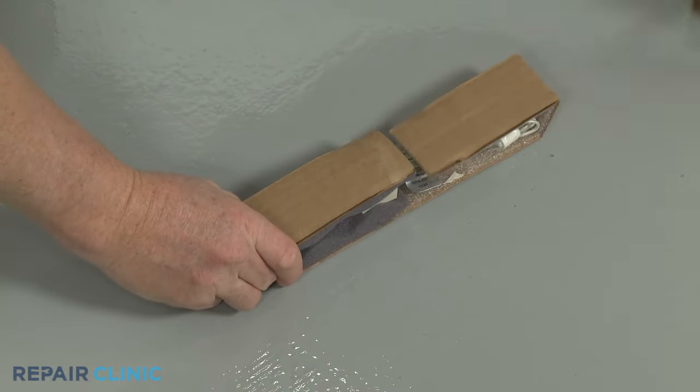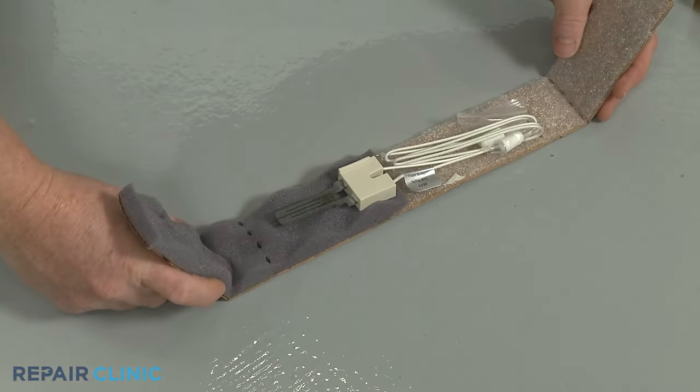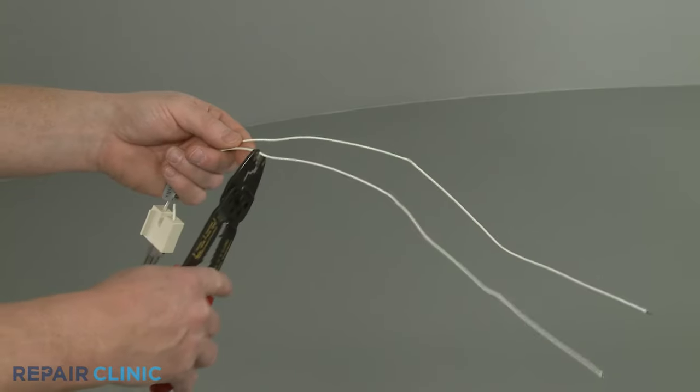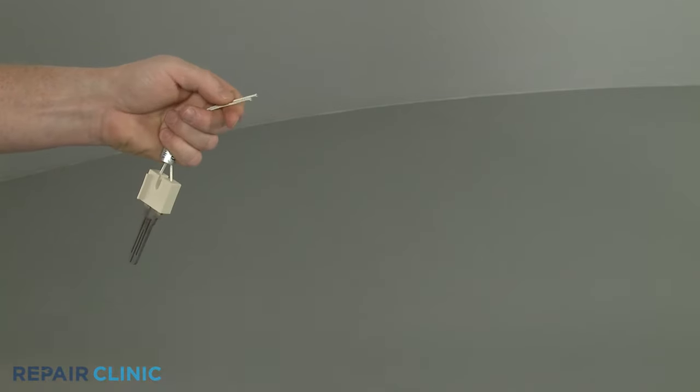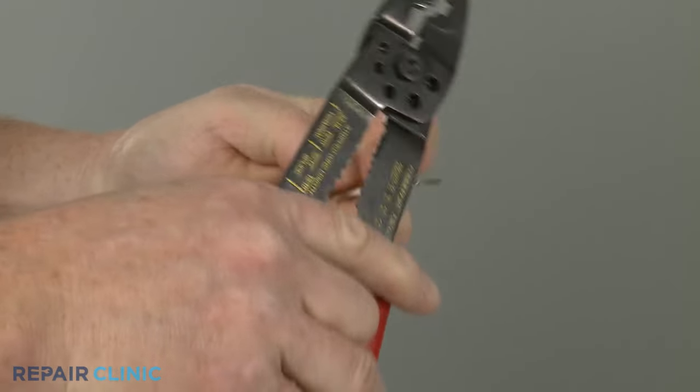For some furnace models, a universal igniter may be available for installation. To prepare a universal igniter for installation, trim the new igniter wires and strip off a quarter inch of insulation.